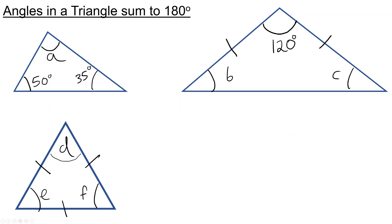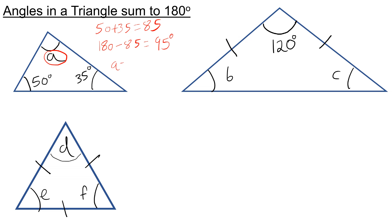Finally, angles in a triangle add up to 180 degrees. In the first question, we want to work out A. So we add up the angles we know, 50 and 35, which is 85. And then we subtract this from 180: 180 take away 85 is going to be 95. So A is equal to 95 degrees.